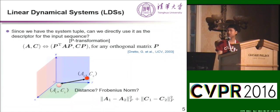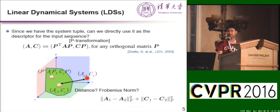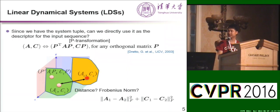I won't give the full details about the P transformation here. What this means is that if A, C represents an LDS, then P transpose A P and C P represent the very same system. This basically means that an LDS can be represented by a set with an infinite number of tuples. So how to determine the distance between these sets is an ongoing research problem.